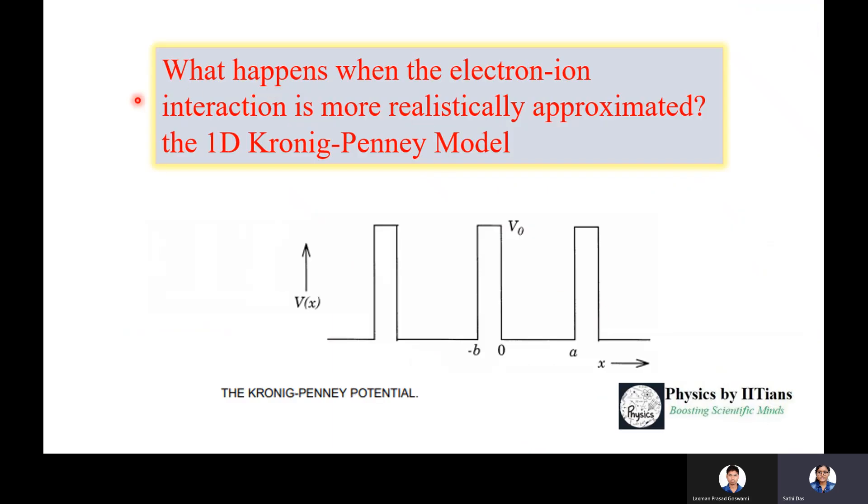So what happens when the electron-ion interaction is more realistically approximated? Because earlier we ignored the electron-electron interaction and the electron-ion interaction, but that is not realistic. So here we discuss the one-dimensional Kronig-Penney model. This is the form of potential that was assumed by Kronig-Penney to make the electron-ion interaction in a more realistic way inside a crystalline solid.